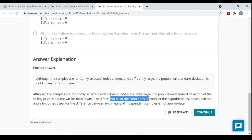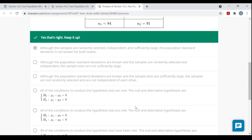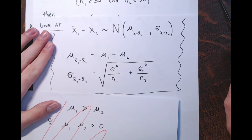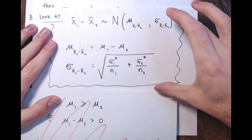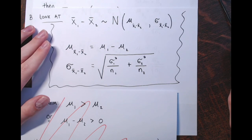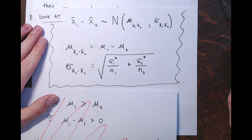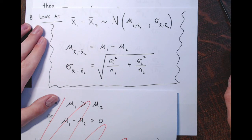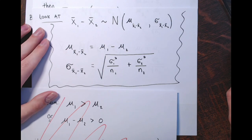They mentioned all the conditions to conduct the difference between two means test where the population standard deviations are known. This was a longer video because of that initial explanation. Hopefully watching me go through this helps you out when you're working on this on your own, looking at the more instruction, reading the answer explanations. Thanks for watching.